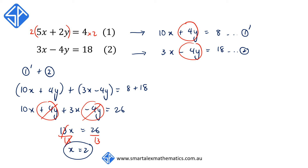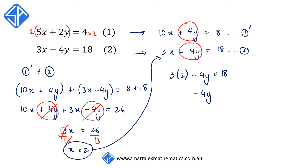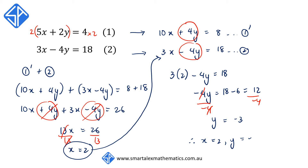We substitute x is equal to 2 back into equation 2 to solve for y. So we have 3 times 2 minus 4y is equal to 18, giving us negative 4y is equal to 18 minus 6, which is equal to 12. Dividing both sides by negative 4, we get y is equal to minus 3. Therefore, x is equal to 2 and y is equal to minus 3.